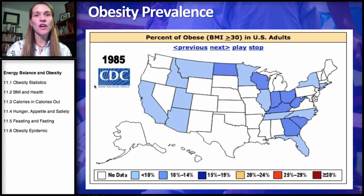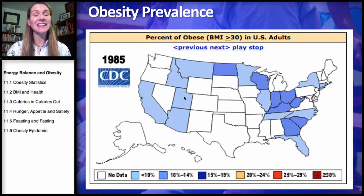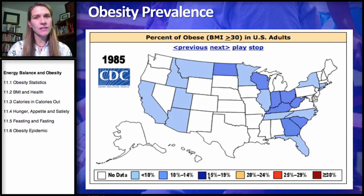We're starting with 1985. The white areas are just a lack of data, but light blue shows obesity prevalence less than 10%. The darker blue shows about 10 to 14%. No states are over 15%, and definitely no states over 30%. This is back in 1985.